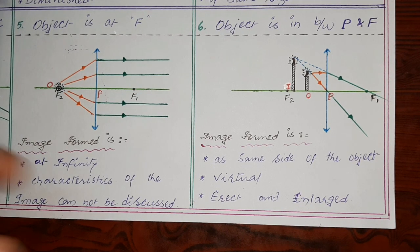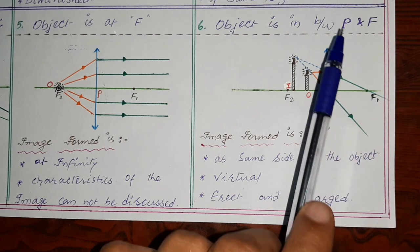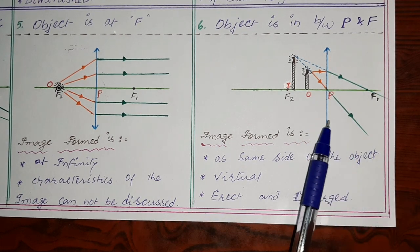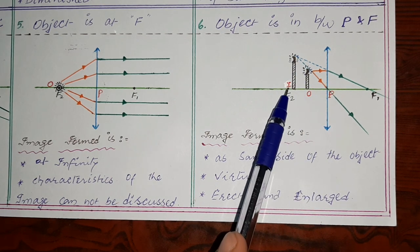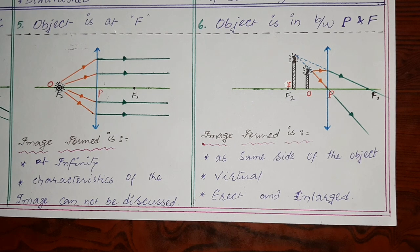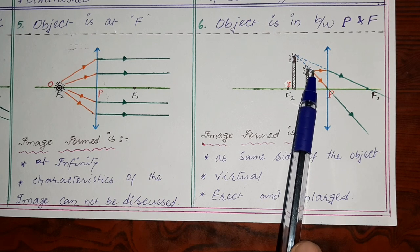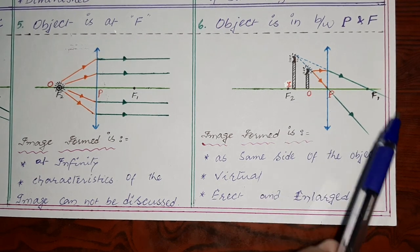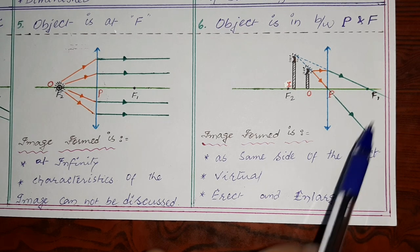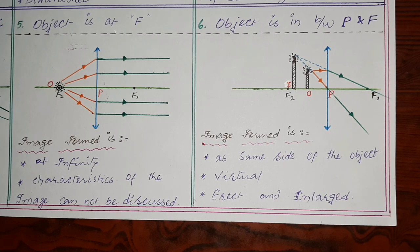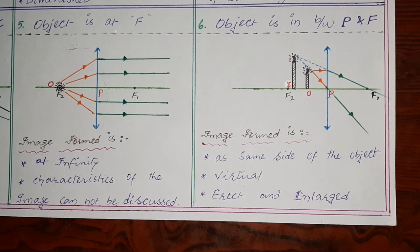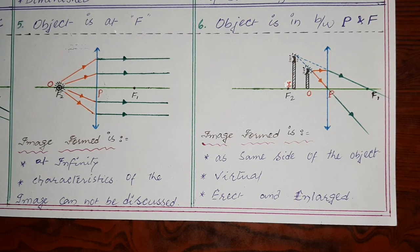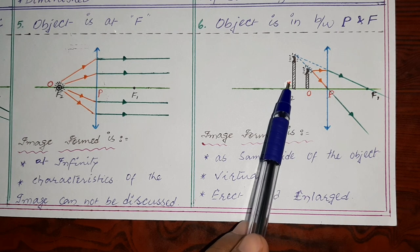In the sixth position, the object is kept between P and F — between the optic center and the focal point. We take two light rays: the first travels parallel to the principal axis and after refraction passes through the focal point; the second passes through the optic center. These two light rays have no chance of meeting on the other side, so we extend them to get the image. The image is formed on the same side as the object.